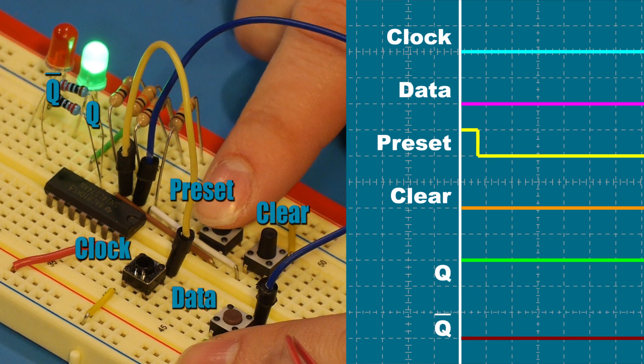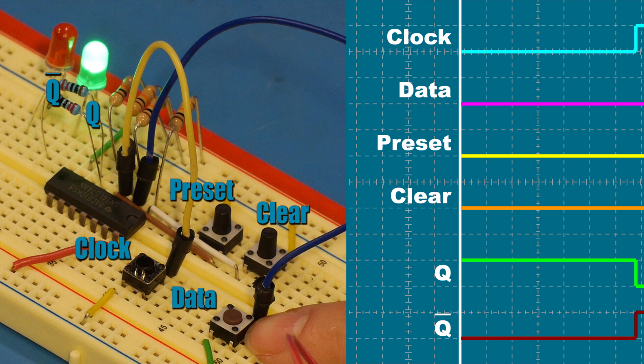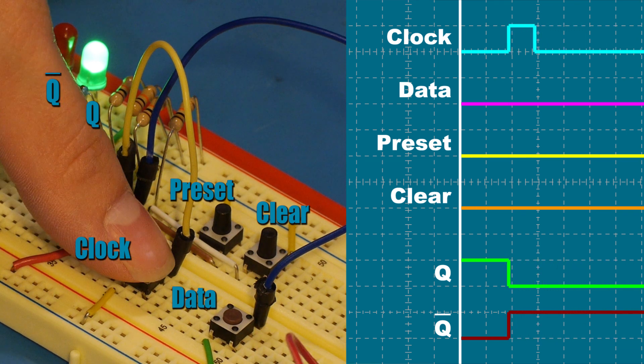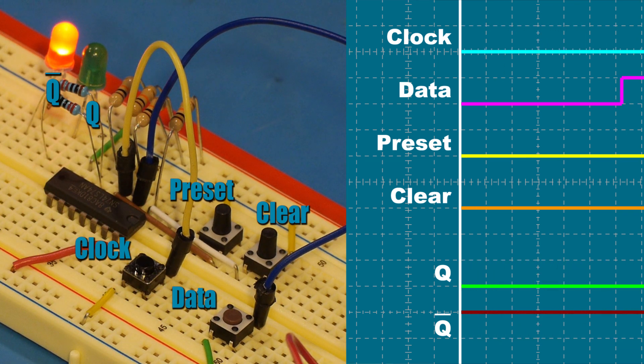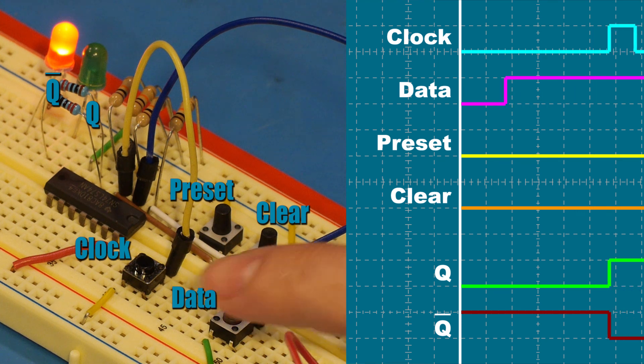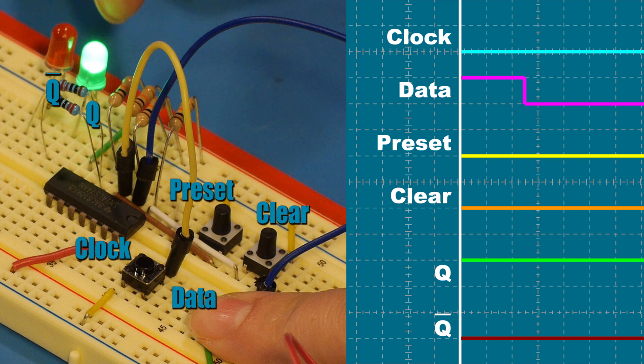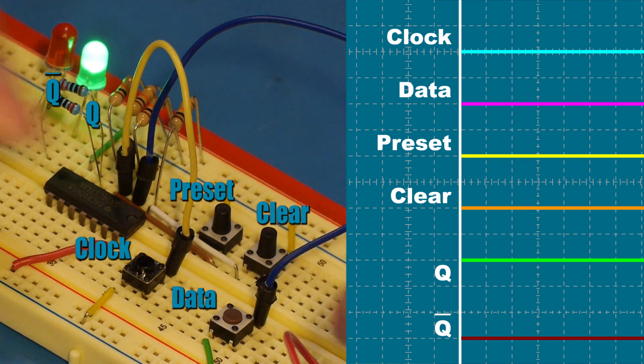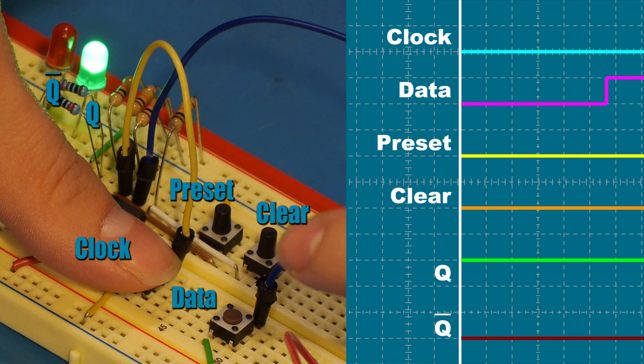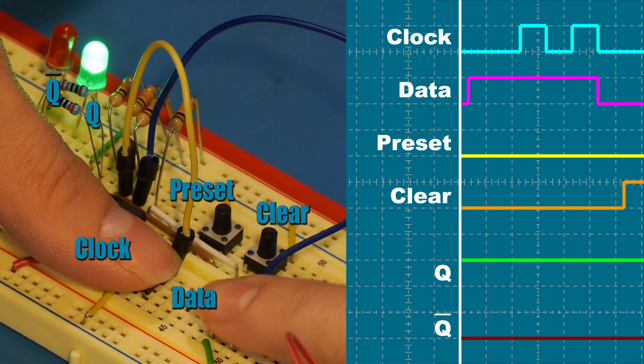The clock has to pulse in order to send the data signal to the outputs. So if I hit preset to make Q high, data is currently low. So when I trigger the clock, it transmits data's low signal to output Q. If I hold data high and trigger the clock, data's high signal is sent to output Q. If the data signal doesn't change when the clock is triggered, nothing happens at the output because it's still sending the same signal.